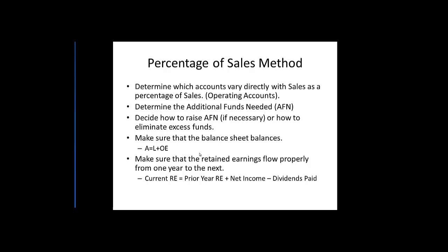The percentage of sales method involves determining which accounts vary directly with sales — referred to as operating accounts. Operating accounts are accounts that increase or decrease with sales and are necessary for operations. The second step is to determine the additional funds needed, also called external funds needed. We see how many funds can be generated internally to fund growth, and anything beyond that is obtained externally — or if there's a surplus, we eliminate excess funds.